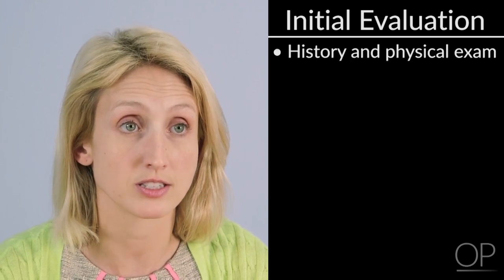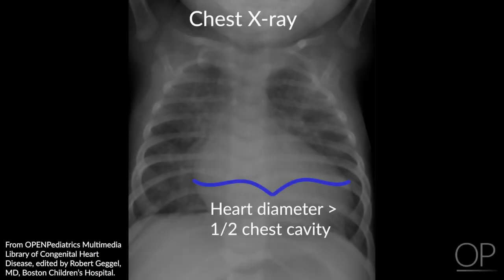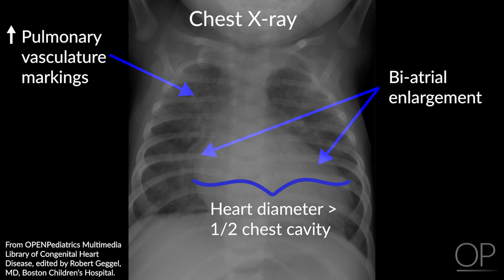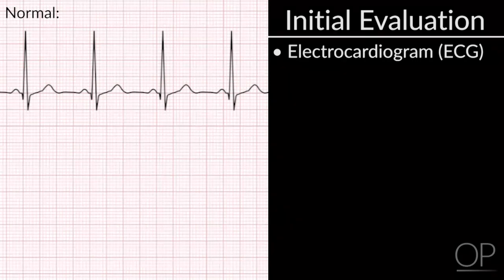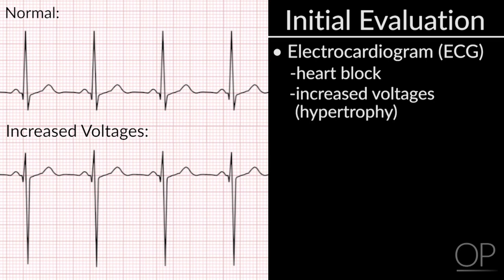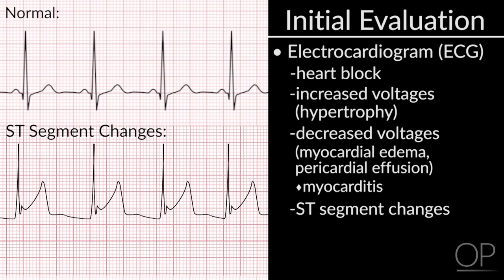Moving on to diagnosis, we first start with a thorough initial evaluation, and depending on the results, we can move on to further tests. The initial evaluation includes history, physical exam, and investigations such as chest radiography. Chest X-rays are important in identifying cardiomegaly, which may be evident in dilated cardiomyopathy; increased pulmonary vascular markings, which can be a sign of pulmonary congestion or left atrial hypertension; and biatrial enlargement, seen in restrictive cardiomyopathy due to increased ventricular pressure. The electrocardiogram can also be helpful in identifying heart block, increased voltages from hypertrophy, decreased voltages from myocardial edema or effusion as seen in myocarditis, as well as ST segment changes.